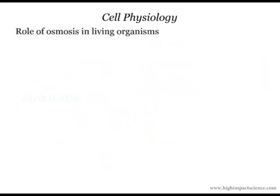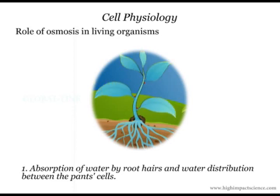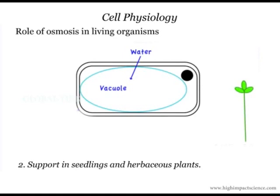Now we look at the role of osmosis in living organisms. The root hair cells of a plant absorb water from the soil by osmosis. This same process — osmosis — helps in water distribution from cell to cell in the body. Support: water taken into cells increases the turgor pressure and hence the cells become rigid and gain support. This type of support is important in seedlings, leaves, and herbaceous plants which are less woody.